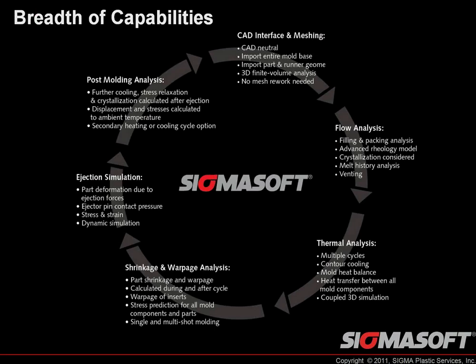Here's a look at the breadth of capabilities. Starting with the CAD interface and meshing: the first requirement with SigmaSoft is a 3D CAD model — it could be just a part or the actual mold base. We can bring in multiple formats including STL, STEP, SAT, and even some native CAD files. Once imported, you go through the quick meshing process, and then determine what you want to do. Most people would do the flow analysis covering the filling and packing phases of injection molding, with the ability to consider crystallization, and then look at things like sink marks, voids, and venting.